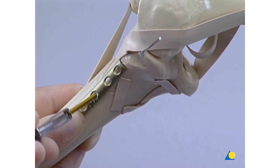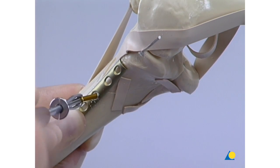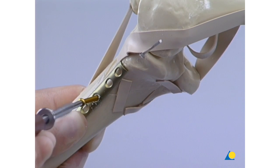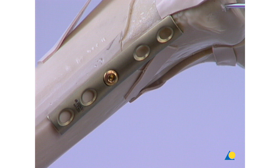A cortex screw is inserted through the middle hole of the plate. This maneuver pulls the plate into its anti-glide or buttress position, thereby reducing the fracture indirectly.